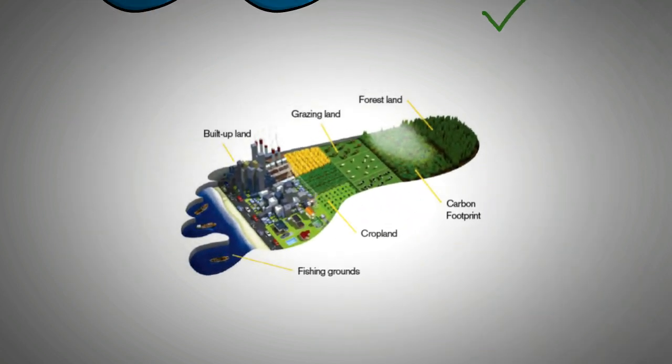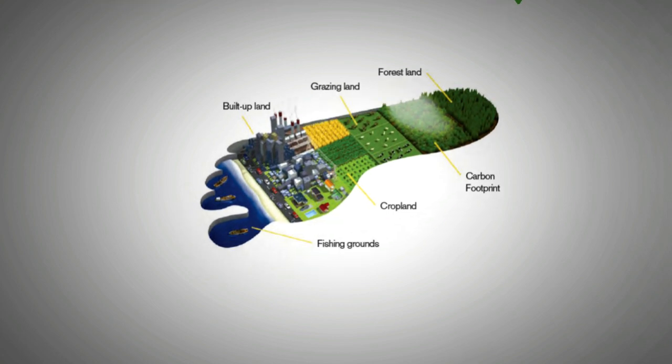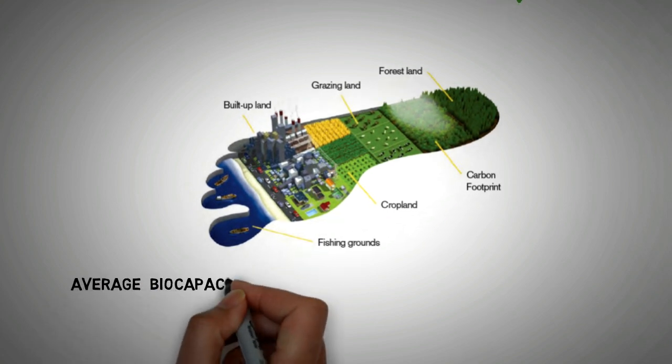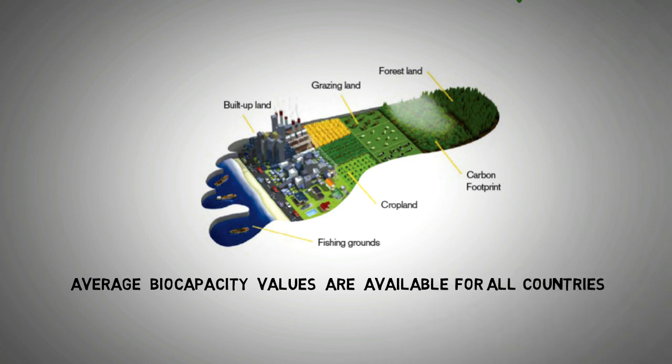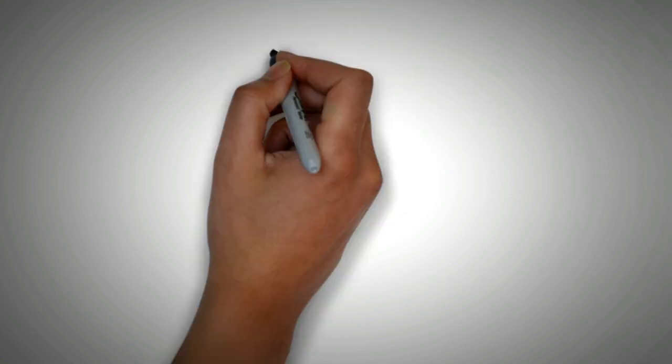Now, bio-capacity varies from region to region. Some areas are rich in natural resources, others are not. There are average values available for both ecological footprint and the bio-capacity for each country. More accuracy is gained if the region in question is limited to a smaller area.